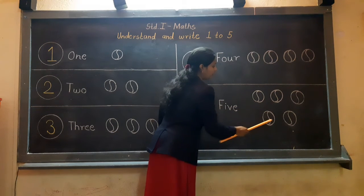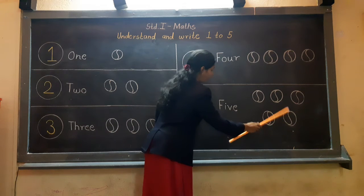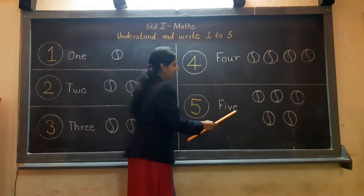3, 4, and 5. Number 5 is spelled F-I-V-E, five.